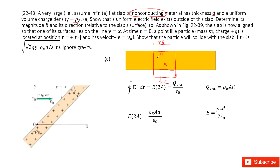Can you determine the electric charge enclosed? Yes. We know the charge density is ρE, times the volume. The cross-sectional area is A and the thickness is D, so the enclosed charge is ρE·A·D. We input this into the equation. We can see A and A cancel, so we get the electric field as ρE·D divided by 2ε₀. This electric field density points vertically and perpendicularly outward from the object.